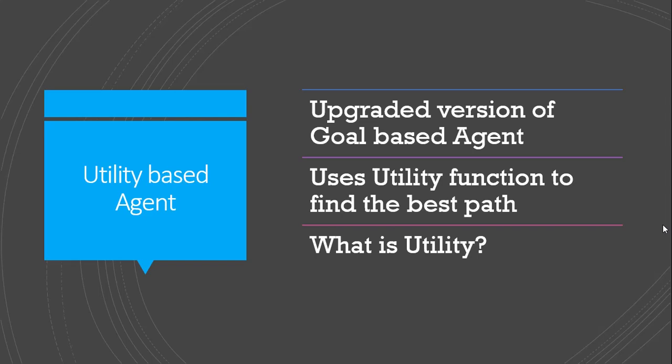The drawback of the goal based agent is that it doesn't know which path is best for it, so it needs to explore all alternative paths or options. The utility based agent, on the other hand, finds the best possible path using the utility function. So the goal based agent may take a lot of time to achieve the goal, while the utility based agent will achieve its goal in the shortest possible time.